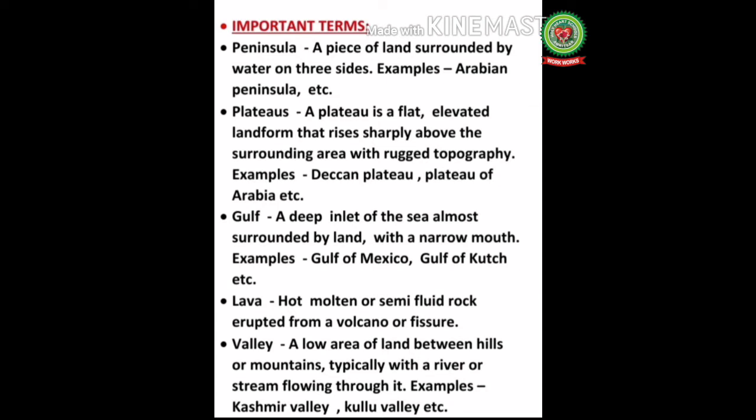Gulf: a deep inlet of the sea almost surrounded by land with a narrow mouth, examples include the Gulf of Mexico and the Gulf of Oman. Lava: hot molten or semi-fluid rock erupted from a volcano or fissure. Valley: a low area of land between hills or mountains, typically with a river or stream flowing through it, examples include Kashmir Valley and Kulu Valley.